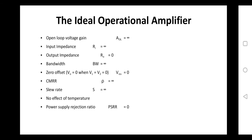The first ideal characteristic is open loop voltage gain. Voltage gain is the ratio of output voltage to input voltage. Since an op-amp has two input terminals — inverting and non-inverting — its basic function is to amplify the difference of the signals. Therefore, the open loop voltage gain should be as high as possible, indicating that it amplifies the difference of signals while rejecting common signals.